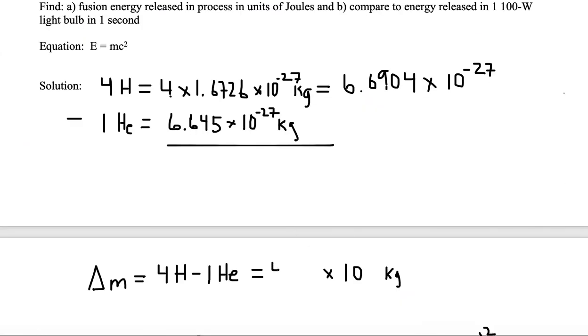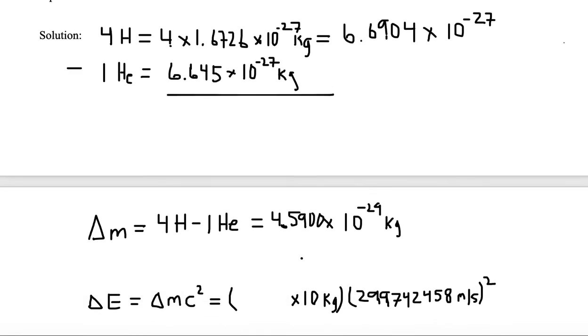And we get 4.59 times 10 to the minus 29th. So you get 4.59 with four digits afterwards. So I'm going to add two zeros times 10 to the minus 29th kilograms. That is our change in mass. From what we started with, subtracting off of what we end up with, we have this much mass that's being used to convert into energy.